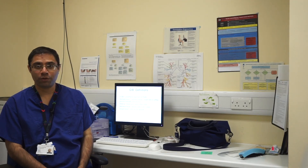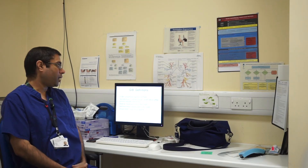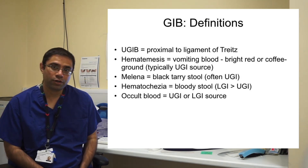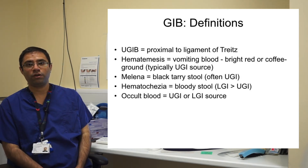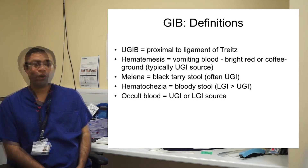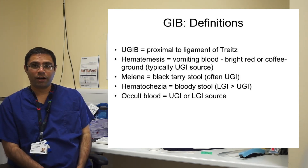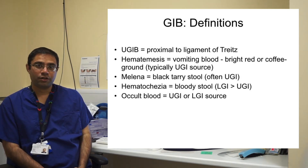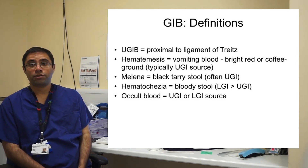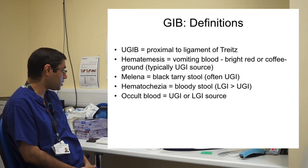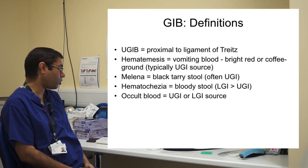Let's talk about how to approach a patient with an upper GI bleed in the first instance. It's very important to understand the definitions and terms being used. Unfortunately these terms are used very loosely with interchangeability amongst them. For consistency amongst the medical fraternity and as part of communication to colleagues, it is very important to stick to standard definitions. The commonly used terms are haematemesis, melaena, haematochezia, or occult blood.